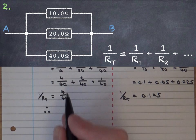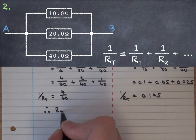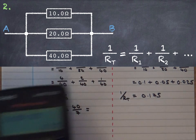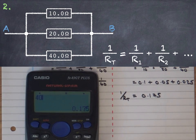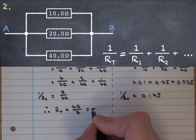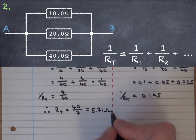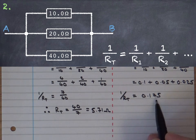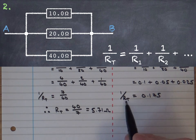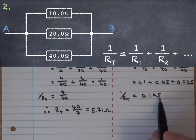So if 1 over RT is 7 over 40 then RT will be 40 divided by 7 and using a calculator 40 divided by 7 is this. So we'll use 3 significant figures 5.71 ohms.